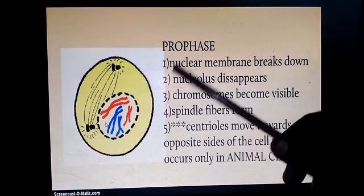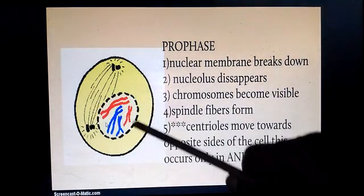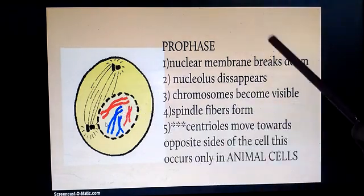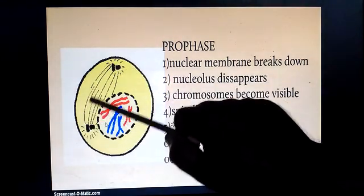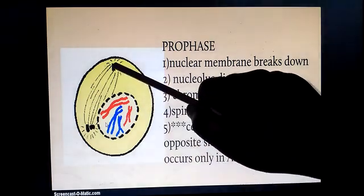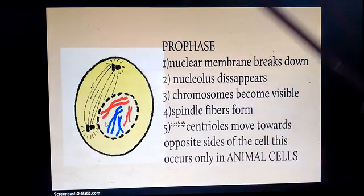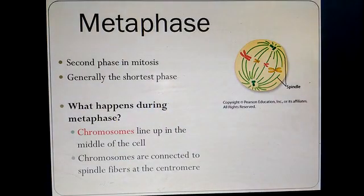During prophase, the nuclear membrane breaks down. The nucleolus — a small round body — disappears. Chromosomes become visible and shorter. Spindle fibers, which are thread-like structures, are formed. Centrioles move towards the opposite poles to pull the chromosomes.